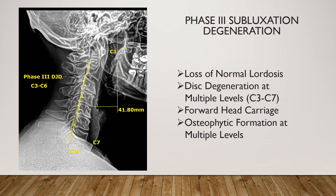This x-ray is showing phase three subluxation degeneration. Here again, we're seeing the loss of the normal cervical curve and a forward head carriage, but now we're seeing many more areas or regions being affected. In this particular view, we're seeing areas between C3 and C6 showing multiple areas of disc degeneration, with lipping or spurring, or osteophytic formation on those vertebrae.